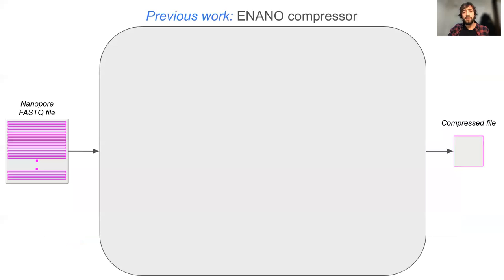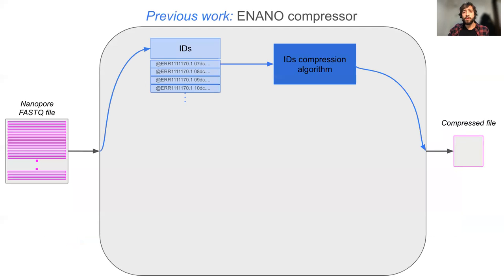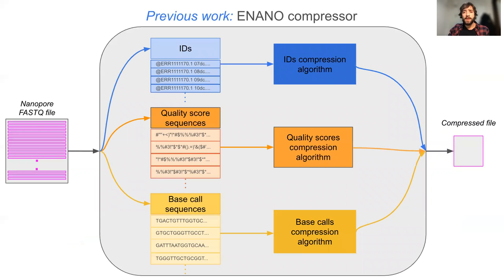In this context, we recently developed a compression algorithm designed for Nanopore files. Typically, a FASTQ compressor receives the FASTQ file as input and uses a different compression algorithm for each one of the parts of the file, as they significantly vary in their composition and statistical properties.